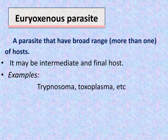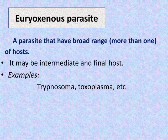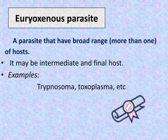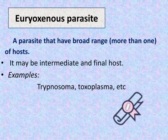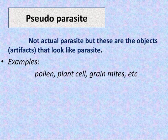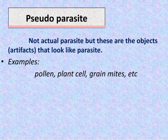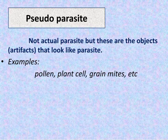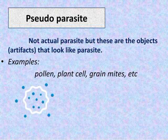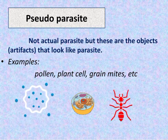Eurioxenous parasites have a broad range of hosts, which may be intermediate or final hosts. Examples include Nosema and Toxoplasma. Pseudo parasites are not actual parasites but are objects that look like parasites — examples are pollen, plant cells, and grain mites.